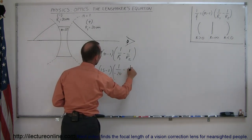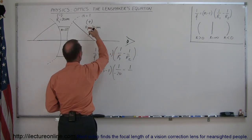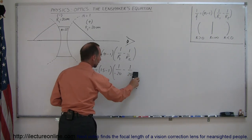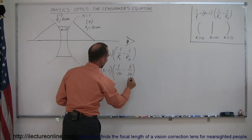R2 was a positive 20 centimeters. I don't have to write centimeters, keep it cleaner like that. Okay.